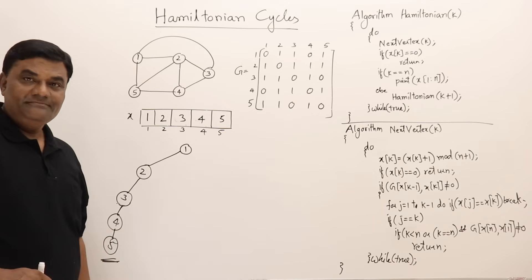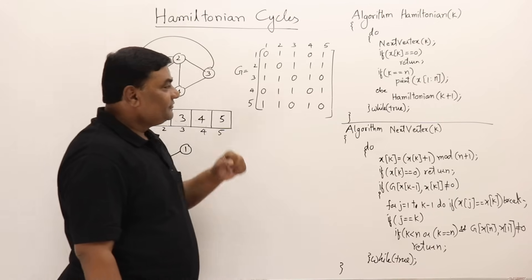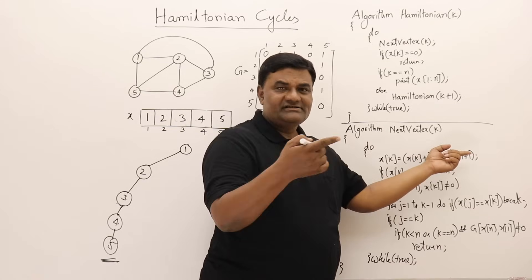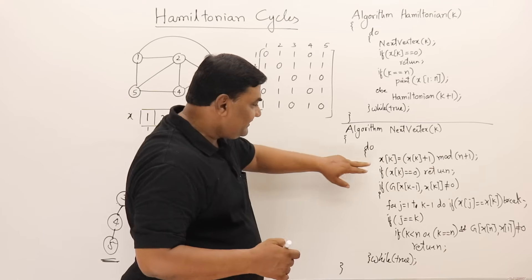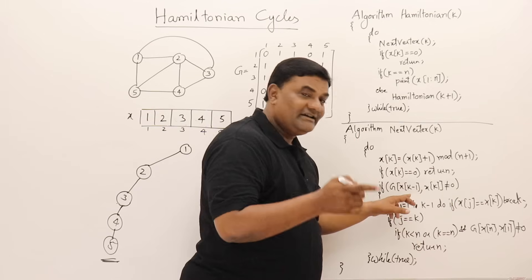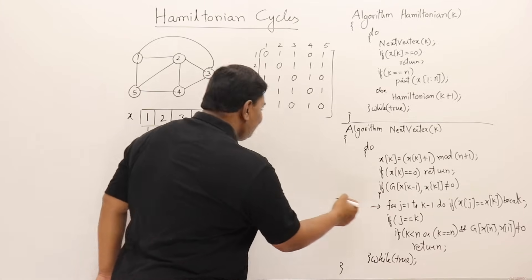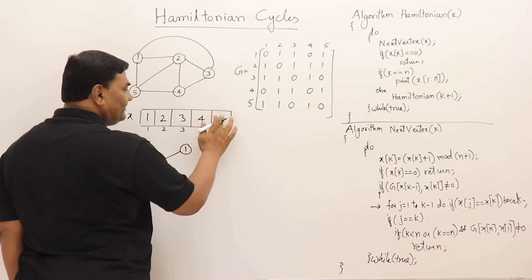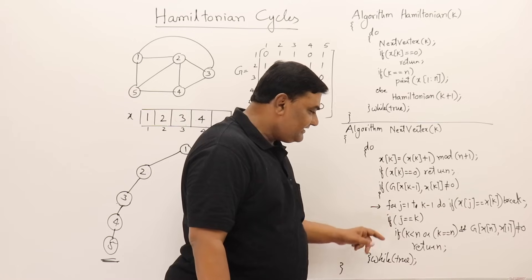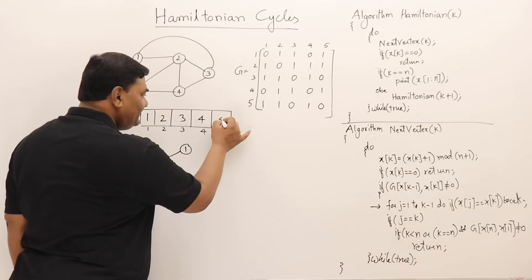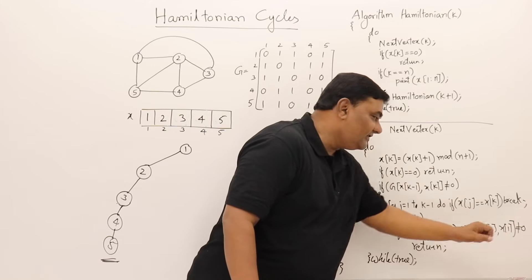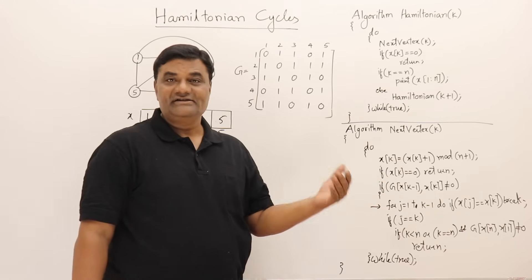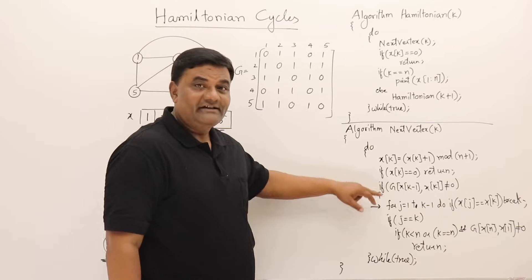The algorithm calls for the next vertex using x of k+1 mod n+1. It checks: is the value not zero? Is there an edge? Is there no duplicate? This code checks for duplicates — if a value is already present, try x+1. There should be an edge between consecutive vertices, and if at the last position, there should be an edge back to vertex 1. This is the bounding function: no duplicates, edge from previous vertex, and edge back to first vertex from last position.